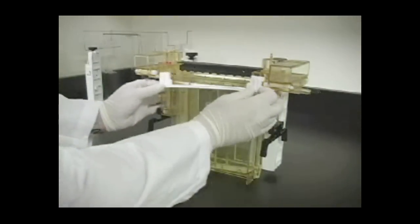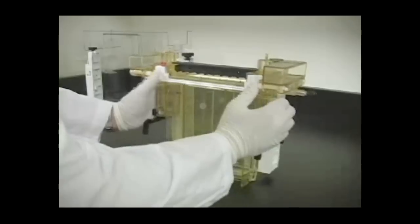Turn the cooling core over and repeat the prior steps to attach the second gel sandwich.